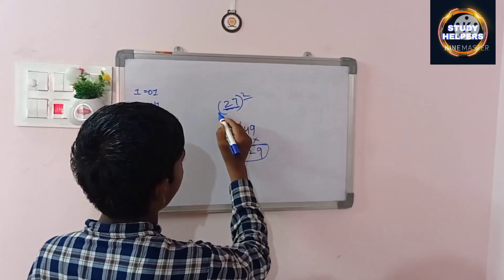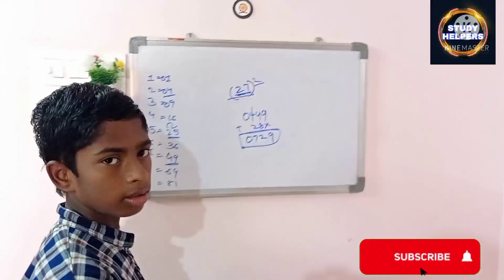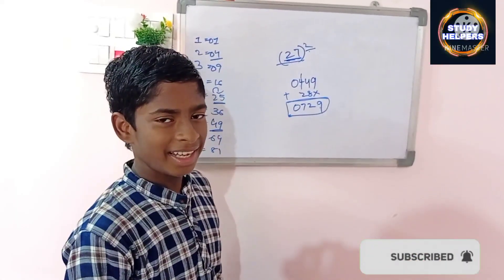This is the square number of 27 square. Please subscribe, StudyHelperStudio.